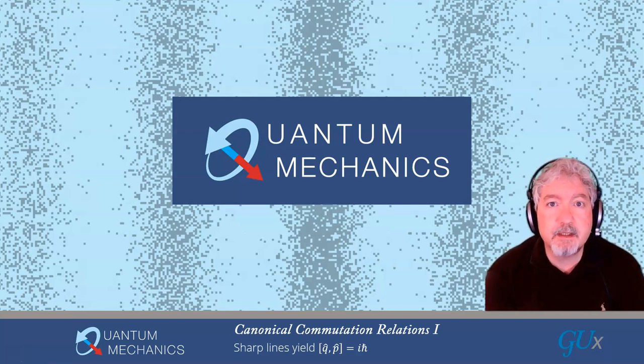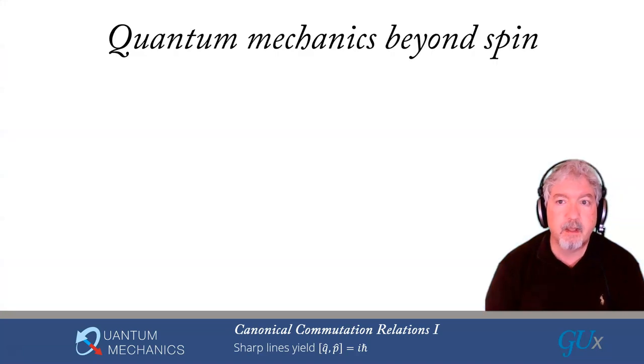Welcome to Quantum Mechanics. This is Module 5, Lecture 3, Part 1. We're going to be talking about the canonical commutation relations and how sharp lines in atomic spectra lead us to conclude the commutator of position with momentum is equal to i h-bar. So we're going to start now talking about quantum mechanics that goes beyond spin.